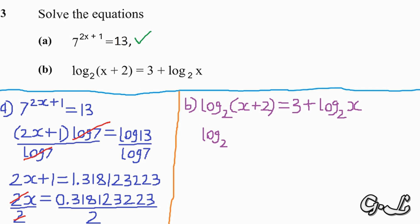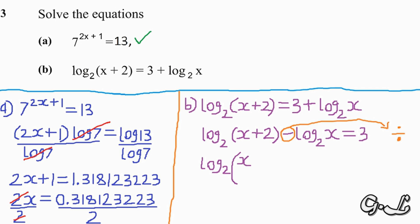What we are going to do is collect the like terms — we bring all the log base 2 terms to the left hand side of the equation. So we get log base 2 of open bracket x plus 2 close bracket minus log base 2 of x equals 3.